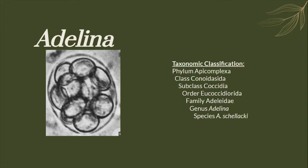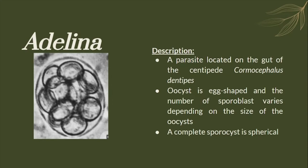Let's start the Parade of Toxa with the genus Adelina. This species is known as a parasite of scent feeds and its oocysts are egg-shaped, and the number of sporoblasts varies depending on the size of the oocysts.